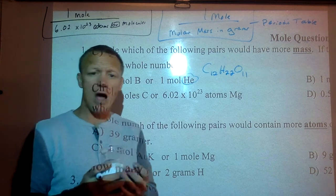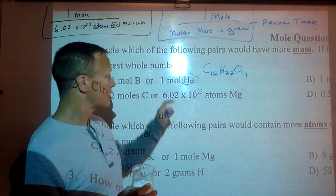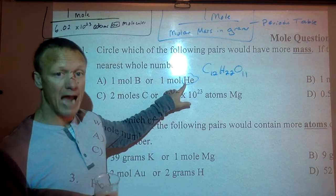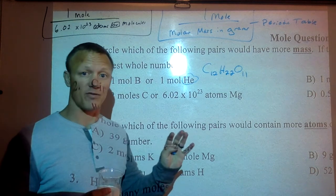So a mole is a counting unit, but it is not how much a mass it is. 6.02 times 10^23 atoms of helium would have a mass of 4 grams, if you look at the periodic table.